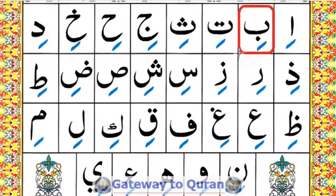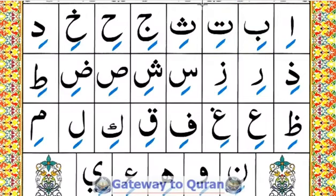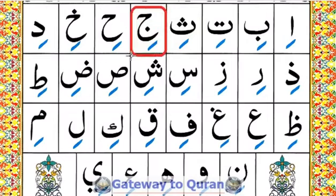Ba kasra = bi. Ta kasra = ti. Tha kasra = thi. Jim kasra = ji.